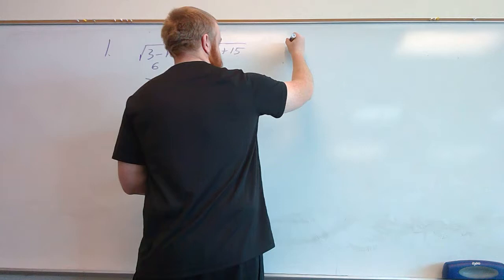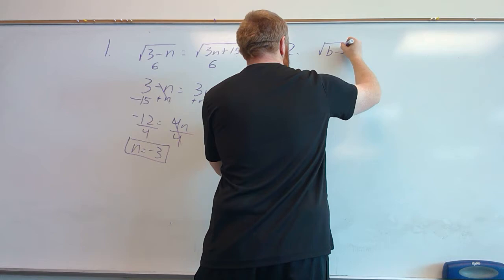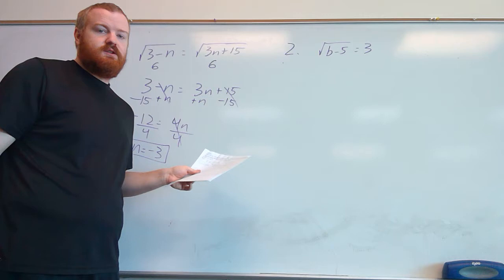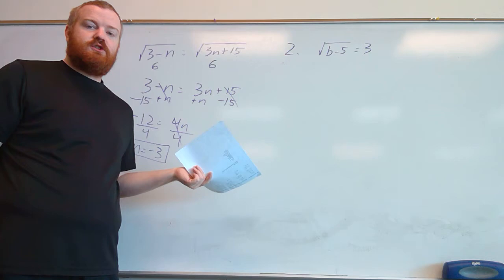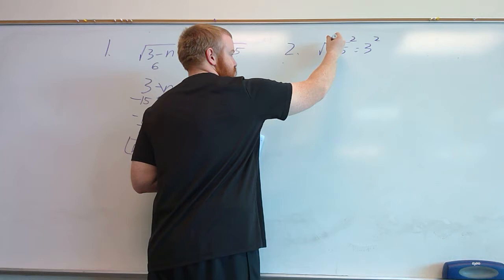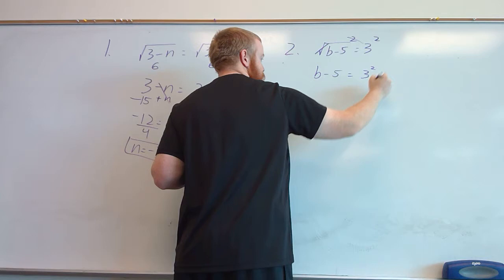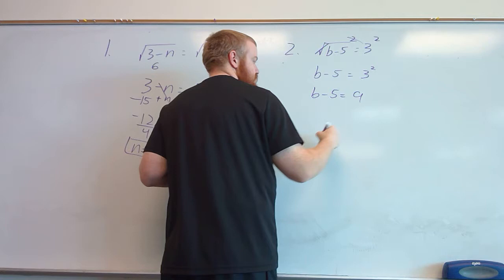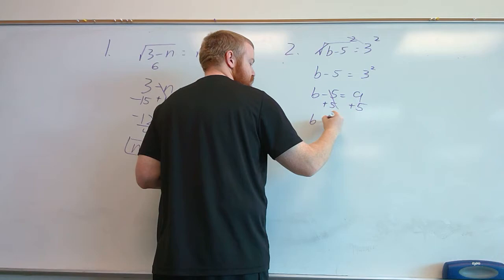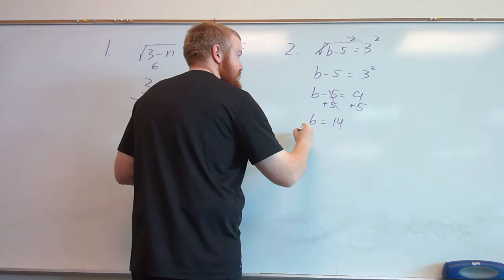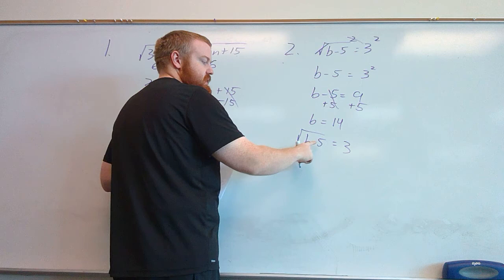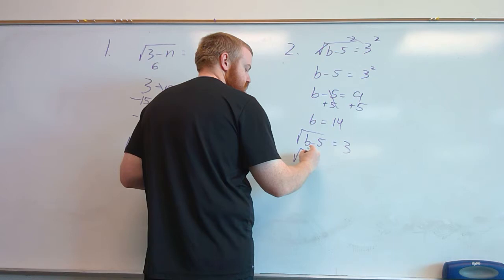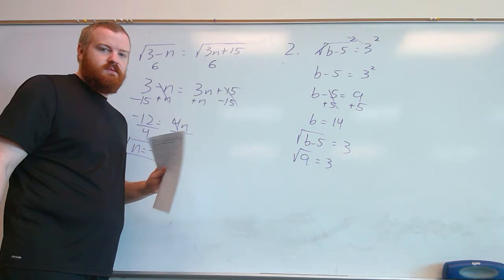For example number 2, we have the square root of something equal to a number. We need to get rid of the radical by squaring both sides. The square cancels the square root, so we have b minus 5 equal to 3 squared. Now 3 squared simplifies to 9, and then we add 5 to the other side, giving us b equals 14. Plugging back in: 14 minus 5 is 9, and the square root of 9 is 3 — so this is also a good solution.